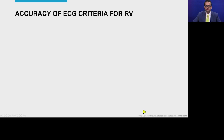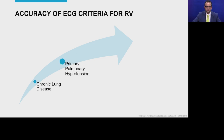The accuracy of ECG criteria for right ventricular enlargement is quite variable — it is least specific in patients with chronic lung disease, followed by pulmonary hypertension. But if you have RV enlargement based on ECG in patients with congenital heart disease, they will for sure have RV enlargement noted on an imaging study. These criteria are quite sensitive and specific for RV enlargement in this context, and may clue you in to an underlying congenital heart disease.